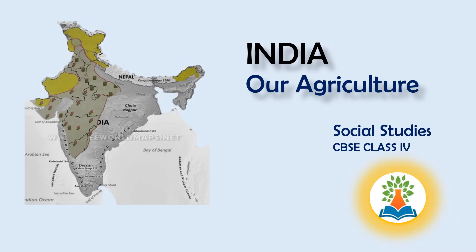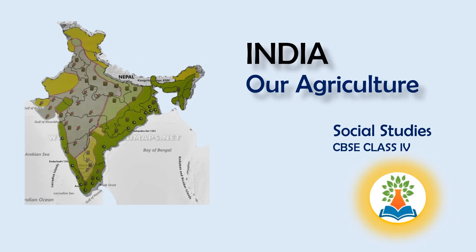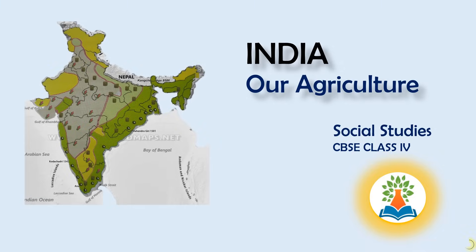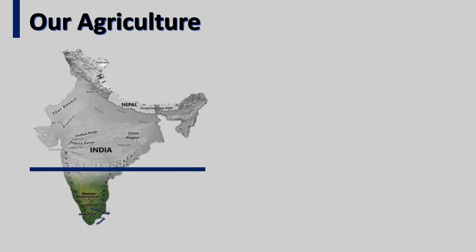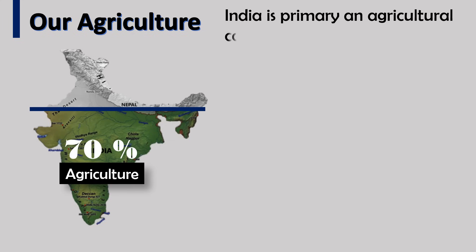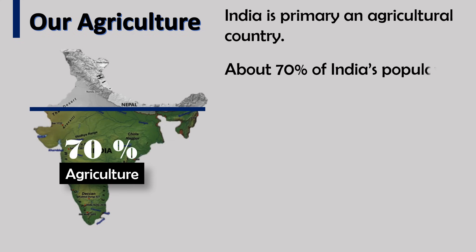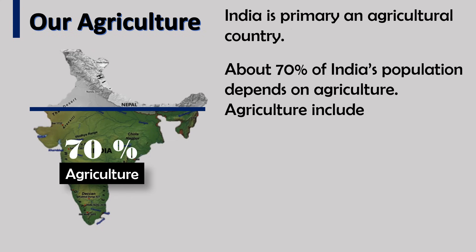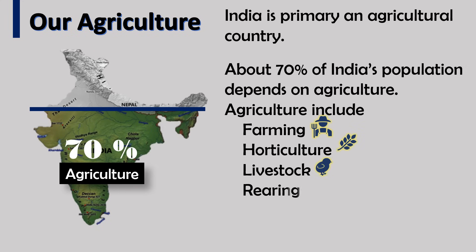Hello friends. In this video we will learn about an interesting topic: agriculture in India. India is a primary agricultural country. About 70% of India's population depends on agriculture. Agriculture includes farming, horticulture, livestock rearing, fishing, and forestry.